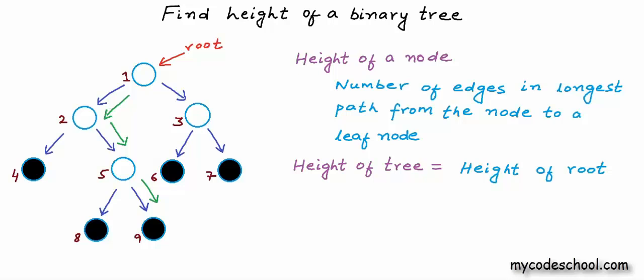In this example tree, height of node 3 is 1, height of node 2 is 2 and height of node 1 is 3 and because this is the root node, this is also the height of the tree.